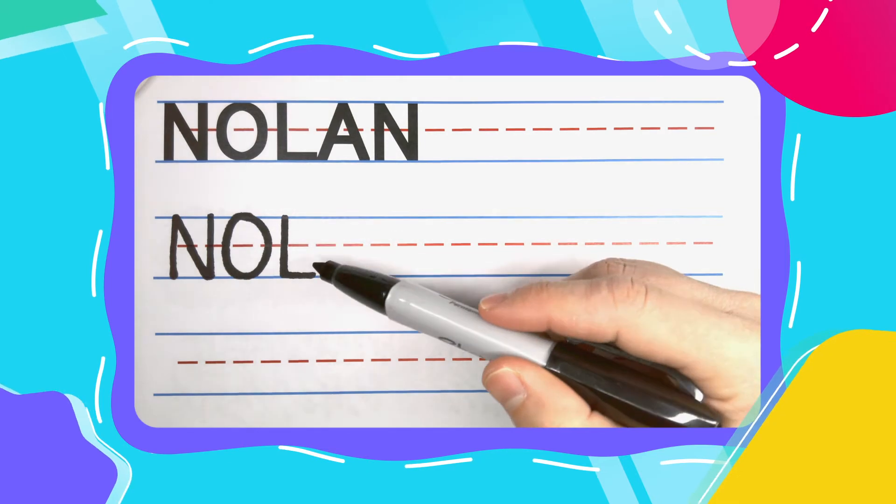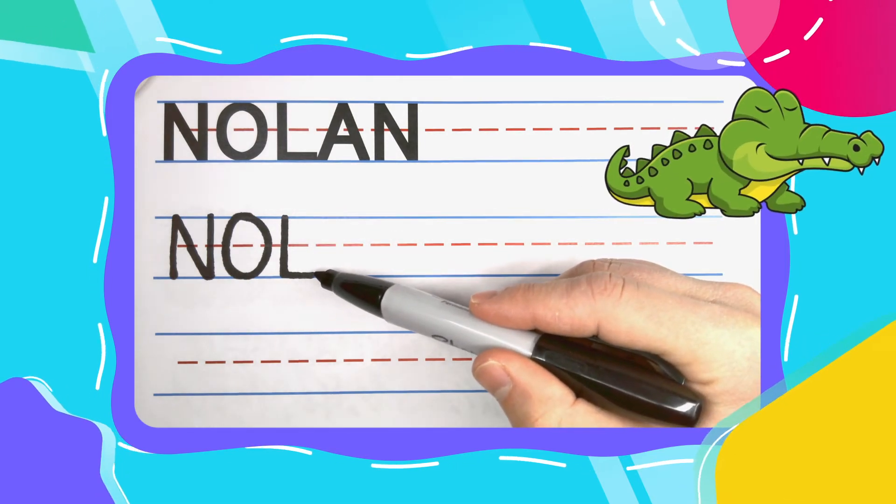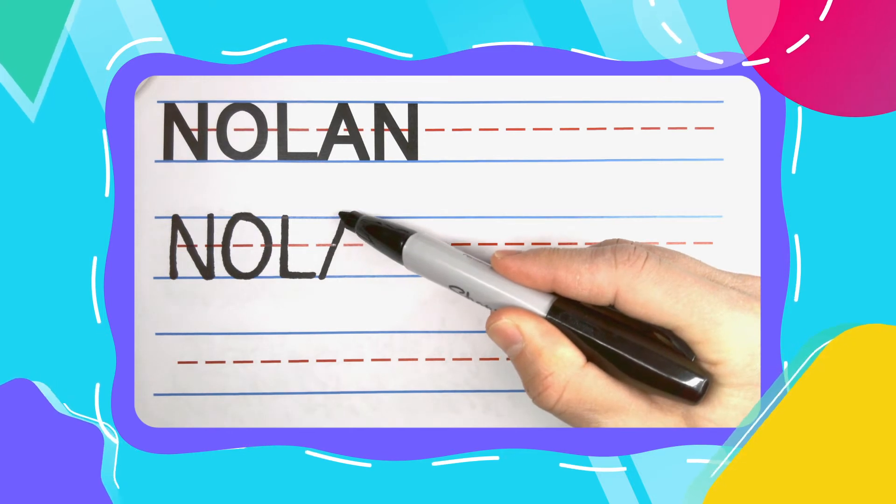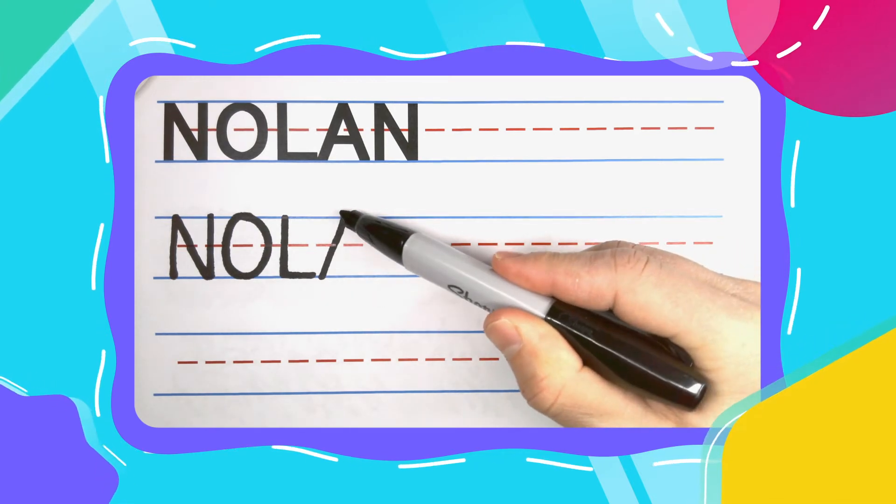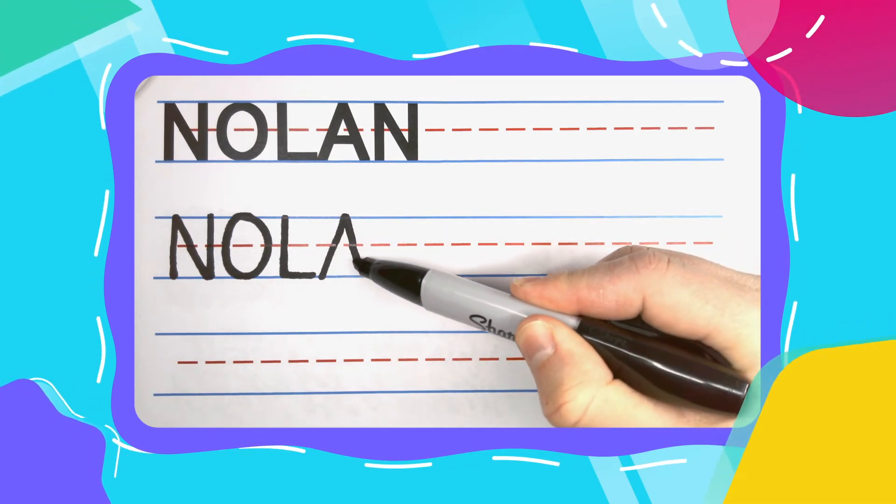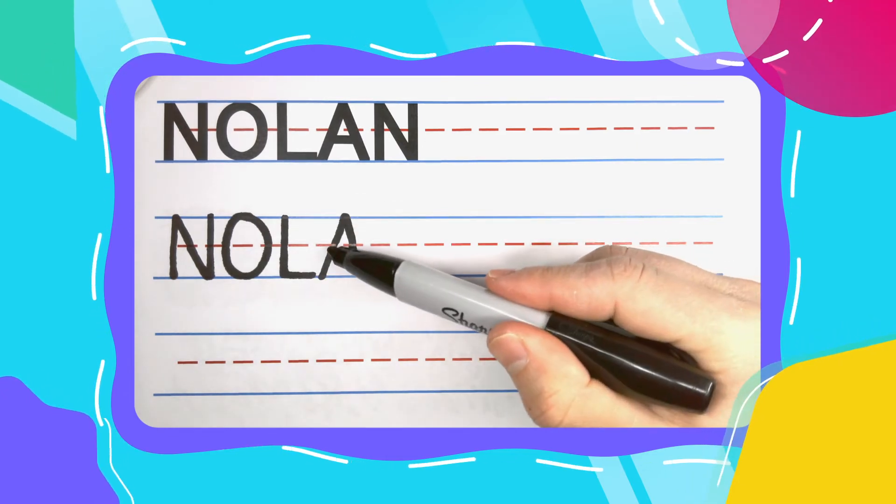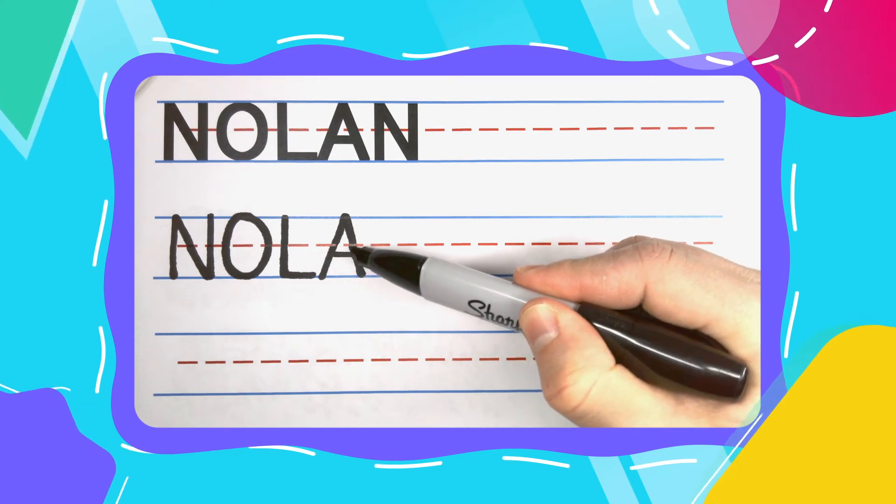The next letter in Nolan is the alligator A. Alligator A's start at the bottom, diagonal your way up, stop when you're at the top, and keep that pen there. Diagonal your way back to the bottom. Now you have an upside down alligator mouth, and you can close it with some alligator teeth.